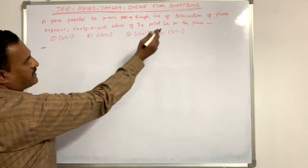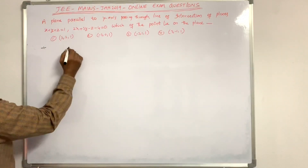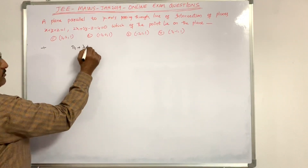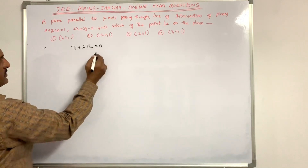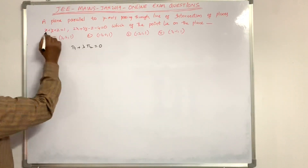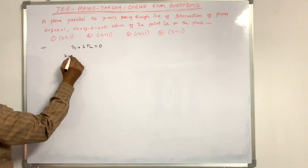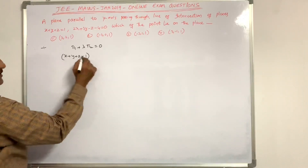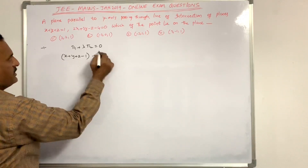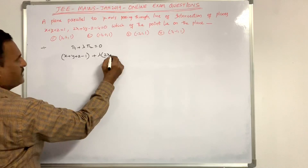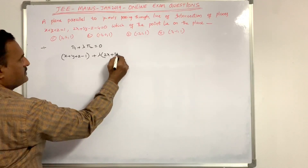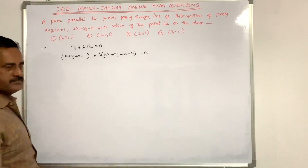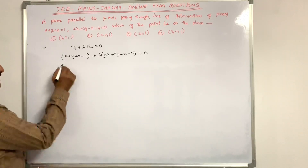The plane through the intersection of the given planes is written as π1 + λπ2 = 0. The first plane equation is x + y + z - 1, plus λ times the second plane 2x + 3y - z - 4 = 0. Taking common terms by variable: